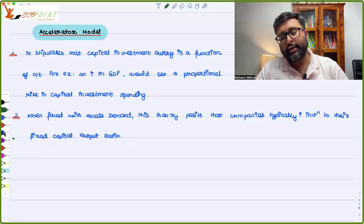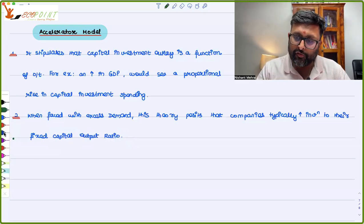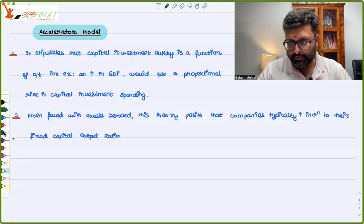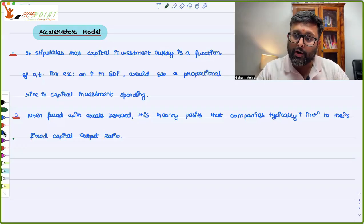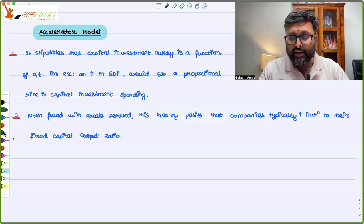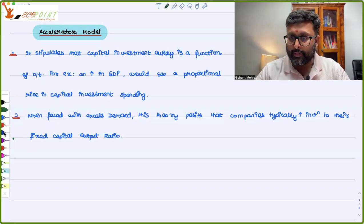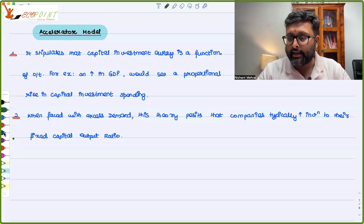In the accelerator model, firms increase investment with changes in income and changes in GDP. Supposedly, if there is an increase in GDP, firms are going to respond by increasing investment. Firms have to maintain their fixed capital-output ratio. So, if demand is increasing and GDP is rising, firms are also going to increase their capital investment to meet that increased demand. That is what the accelerator model is.